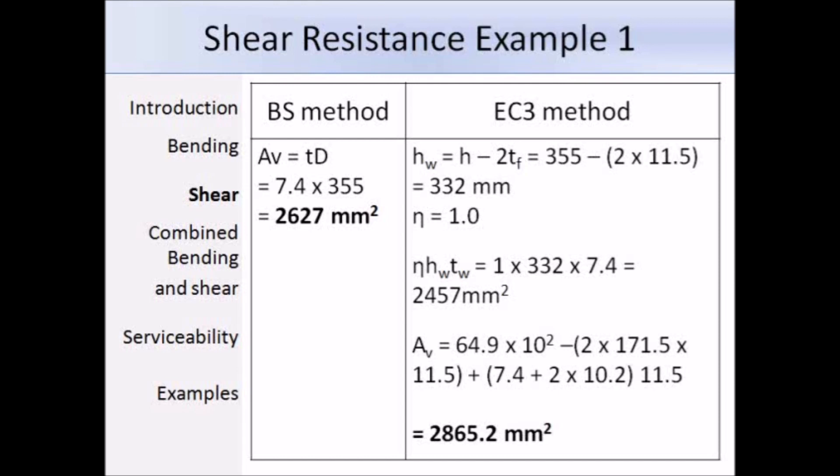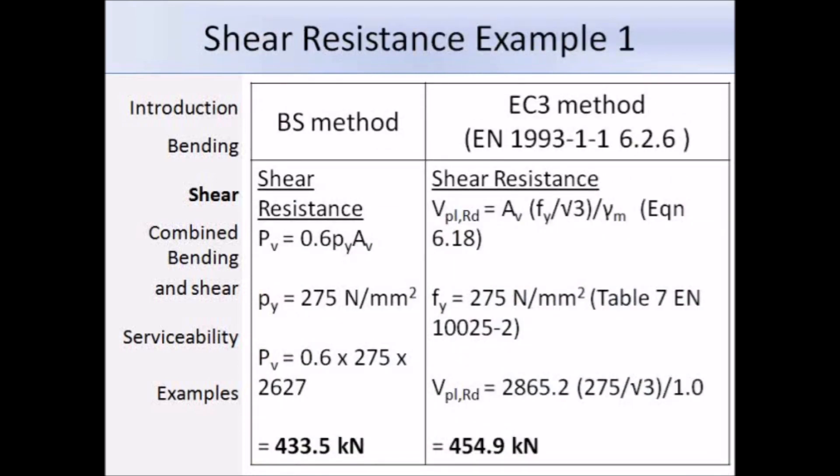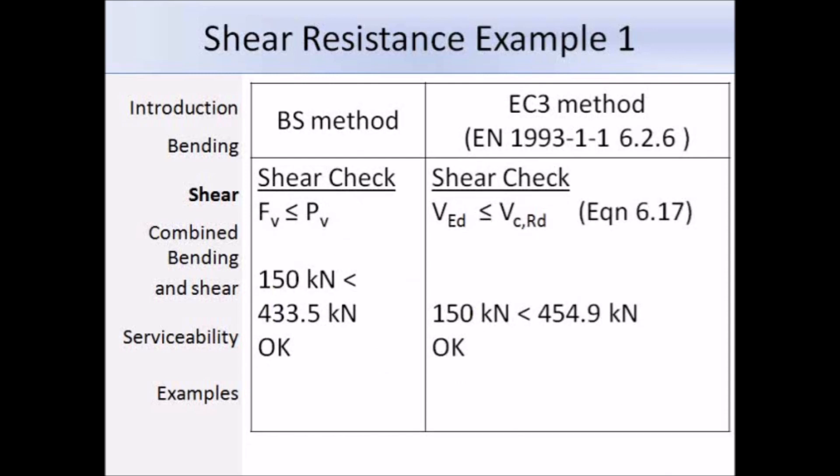Now that we have the shear area, the next step is to substitute that into the equation for the design shear resistance and to make sure that the resistance is greater than the design shear force. Using Eurocode 3, the shear resistance is given by expression 6.18. A_v we worked out as 2865.2 mm squared. F_y is 275 N/mm squared. And the partial factor, gamma M0, is 1. Substituting in those values, we get a design plastic shear resistance of 454.9 kN. In parallel, the BS5950 method gives 433.5 kN. You'll see that Eurocode in this case gives increased resistance. The final step is to make sure that the design shear resistance is greater than the design shear force. We can say that for both methods, there is more than enough resistance. We've completed all of the design steps and we can safely say that the section is suitable to resist shear.